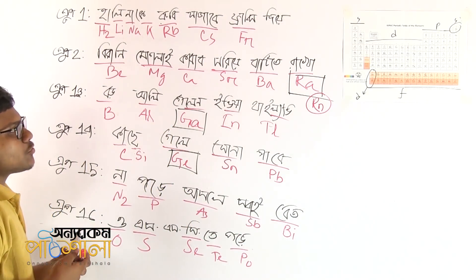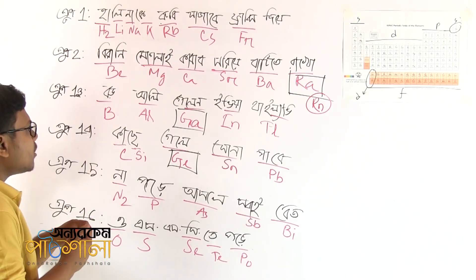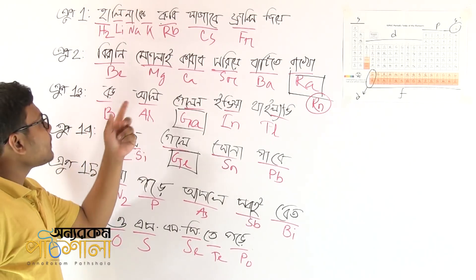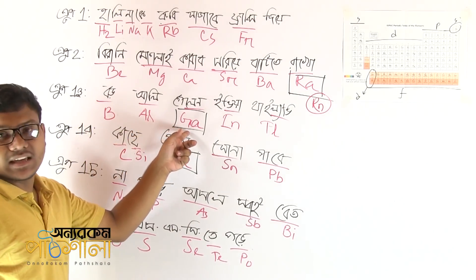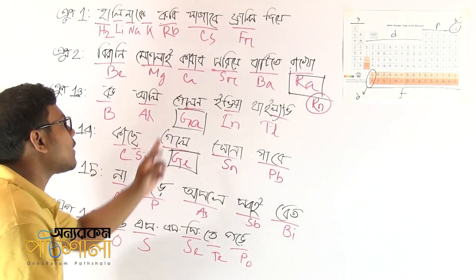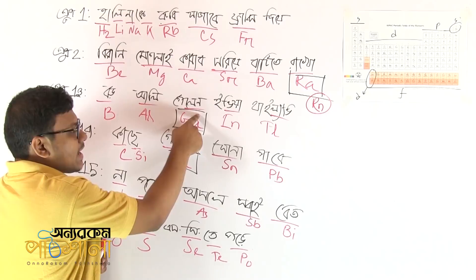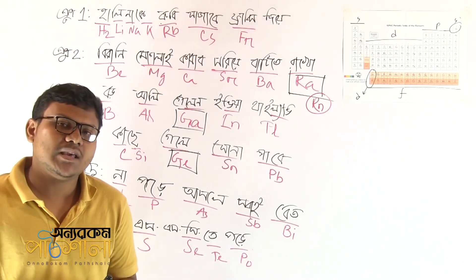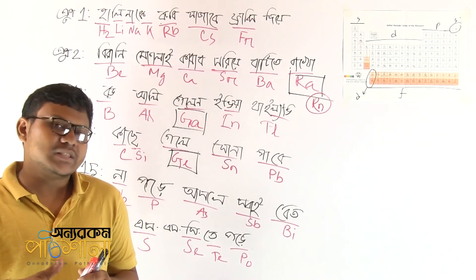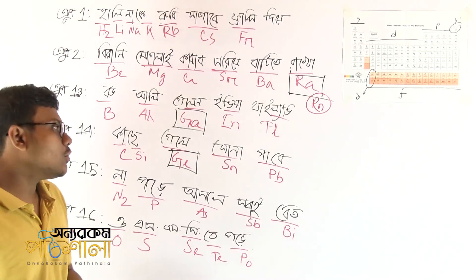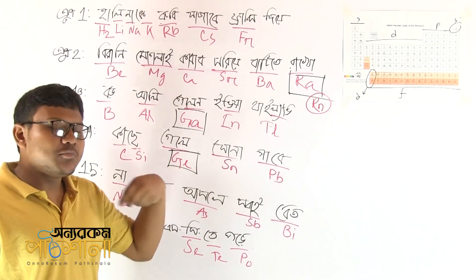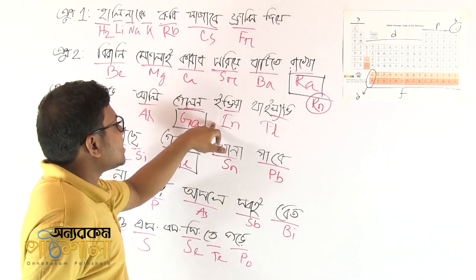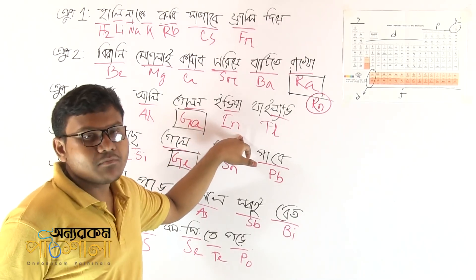Group 13 elements are: boron, aluminium, gallium, indium, and thallium.